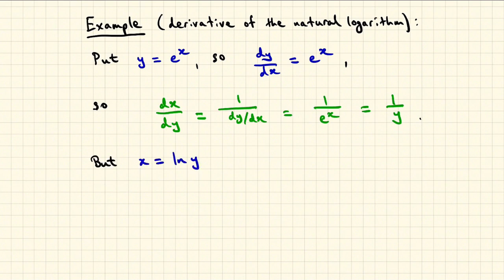That y is e to the x, so undoing this gives x equals a natural logarithm of y. So saying that dx dy equals 1 over y is the same as saying d dy of log of y is 1 over y.